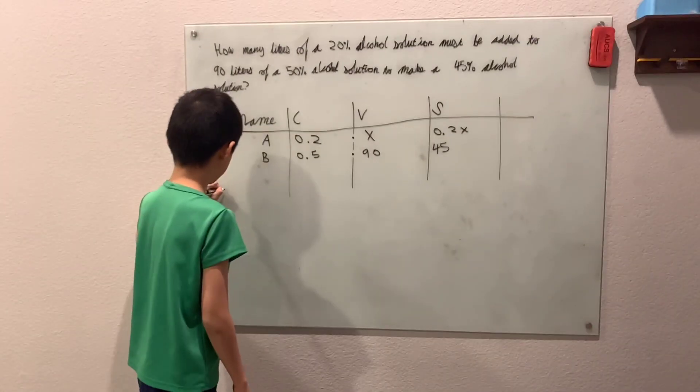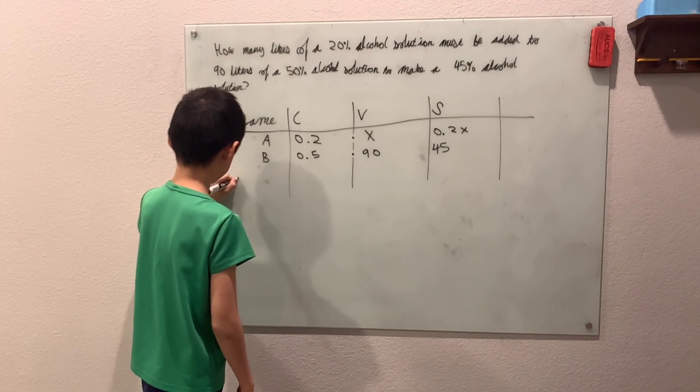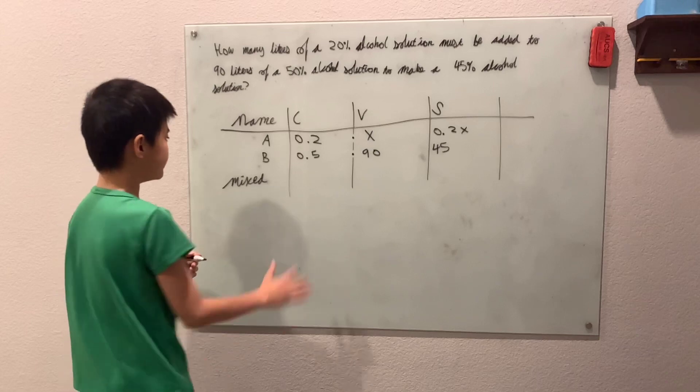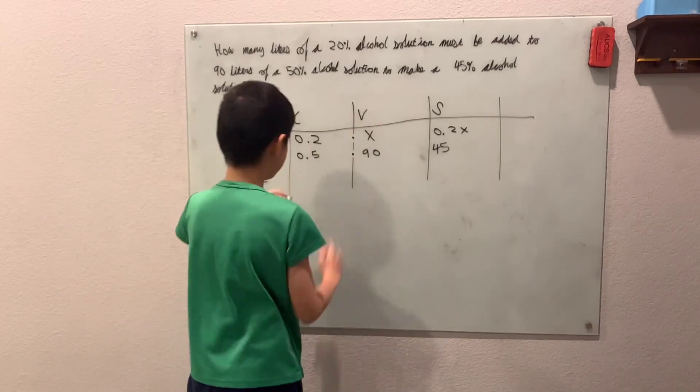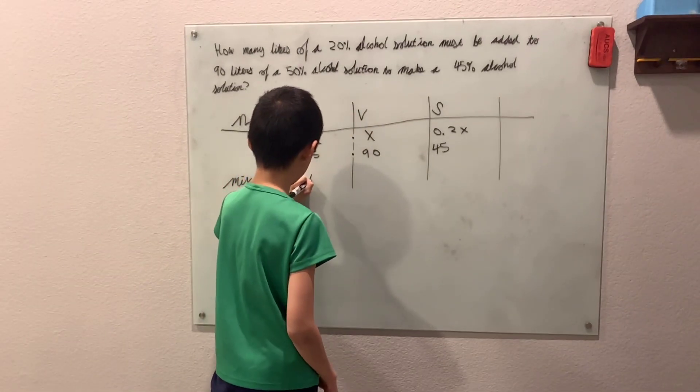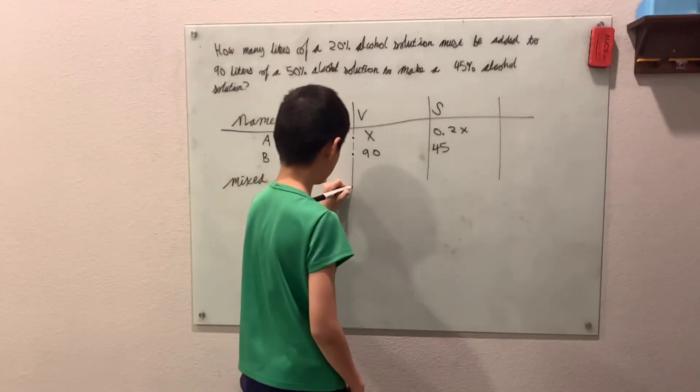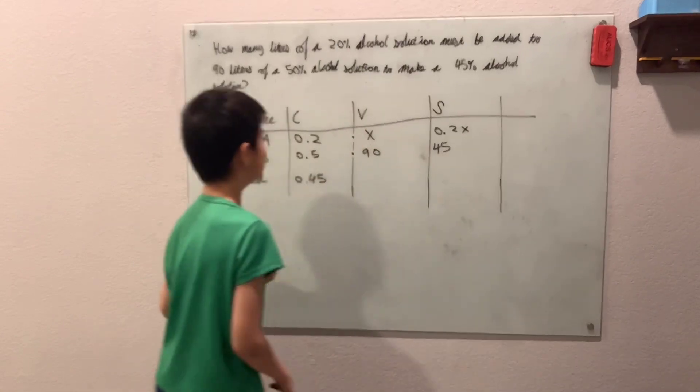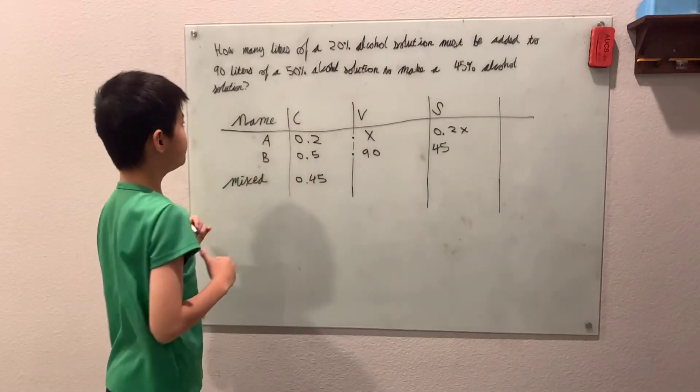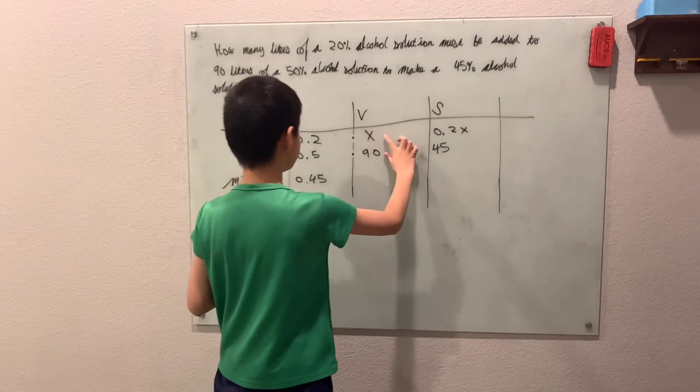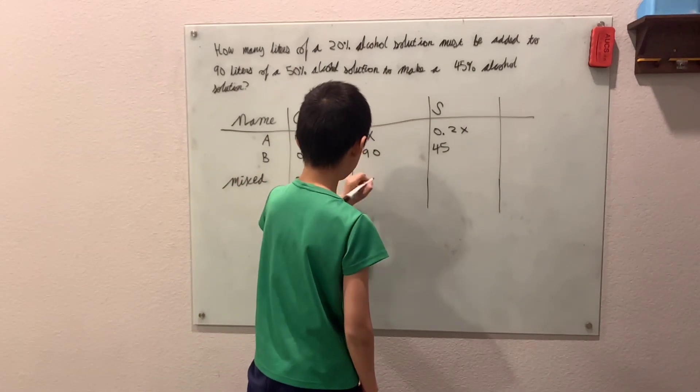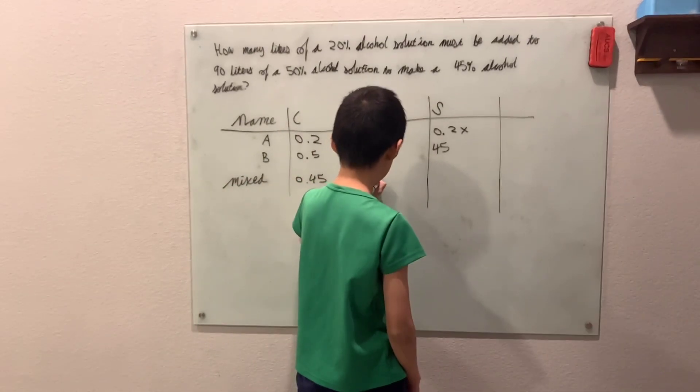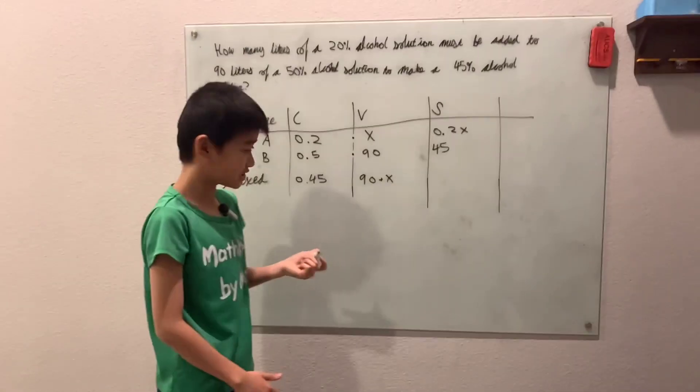And now we have the mixture or mixed. Well, we know that in our mixed, we need a 0.45 concentration of 45% alcohol solution. Well, the volume they don't tell us that, but it's got to be X plus 90, right? We have an X liter solution plus a 90 liter solution. We will have 90 plus X liters.